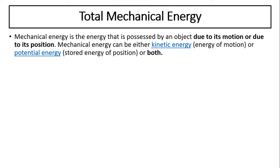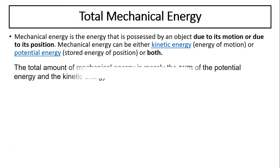Total Mechanical Energy. Mechanical energy is the energy that is possessed by an object due to its motion or due to its position. Mechanical energy can be either kinetic (energy of motion) or potential (energy of position) or both.